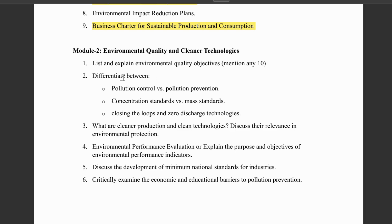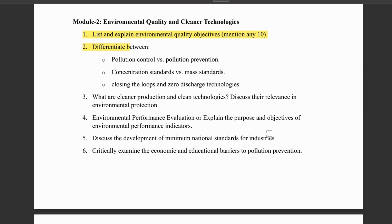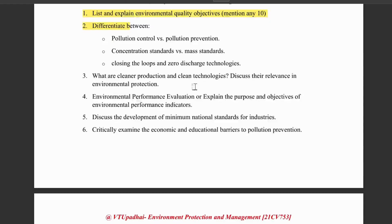Moving on to Module 2. We have what are the environmental quality objectives — there are nearly 14 to 15 objectives in the notes. Out of that, any 10: clean air, climate, ozone layer, groundwater, forest, greenery — very general things you can write here. Then, difference between pollution control and pollution prevention, concentration standards versus mass standards, closing the loops versus zero discharge technologies. For zero discharge technology and closing the loop, there are figures — you can make a flow chart and explain. These could be asked for 5 marks or 10 marks.